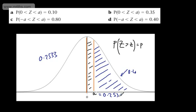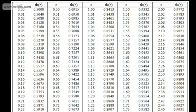All we're doing now is using a bit of logic. If we know the area that we've been given, we know the total area to the right of 0 is 1/2. We simply subtract this value away and then look this up in our tables.